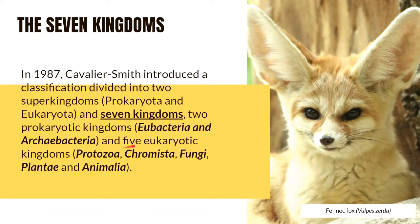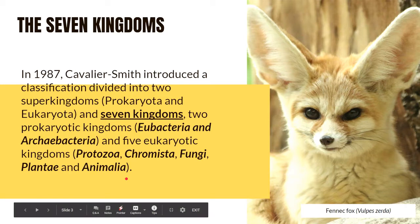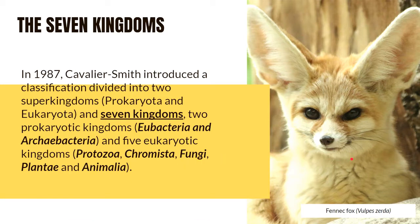The remaining five are eukaryotic kingdoms: protozoa, chromista, fungi, plantae, and animalia. This is an image of a fennec fox with scientific name Vulpes zerda.